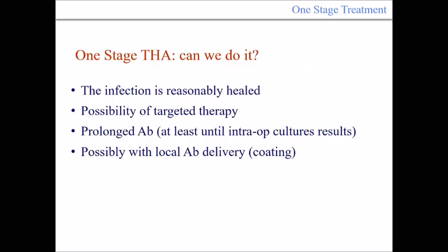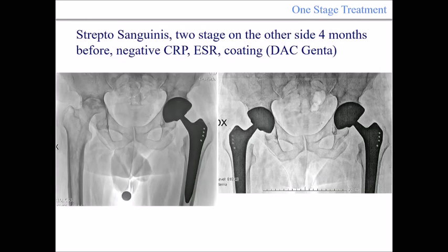Can we perform a one-stage total hip arthroplasty in these cases? It is possible if the infection is reasonably healed, if targeted therapy is feasible because you have identified the organism, if there is prolonged antibiotic therapy — at least until intraoperative culture results are available — and ideally with antibiotic local delivery, whether cemented with antibiotic-loaded cement or via coatings on the implant. We have a case where we did one side as two-stage and the other as one-stage, because by the time of surgery, CRP and ESR were negative and the infection was suspected to be healed. A cementless implant coated with an antibiotic gel with gentamicin was used.